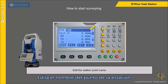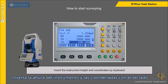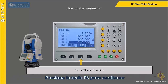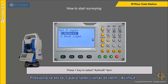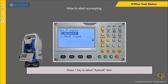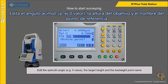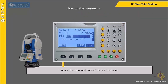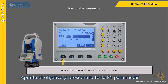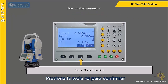Edit the station point name. Insert the instrument height and coordinates by keyboard. Press F3 key to confirm. Press F1 key to select the azimuth item. Edit the azimuth angle, the target height, and the back sight point name. Aim to the point and press F1 key to measure. Press F3 key to confirm.